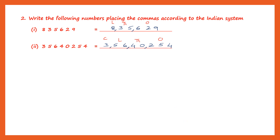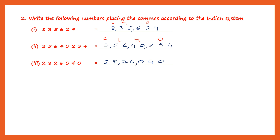Next one. Let's write down the third one: two, eight, two, six, zero, four, zero. Let's read the places: ones, tens, hundreds; thousands, ten thousands; lakh, ten lakh. Comma after each period. So ones, tens, hundreds — comma; thousands, ten thousands — comma; and then you have lakh, ten lakh. The periods are the ones period, the thousands period, and the lakhs period. After the lakhs, comma; after the thousands, there is a comma.